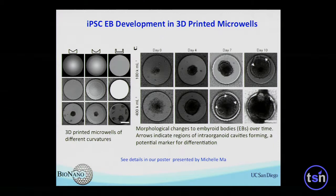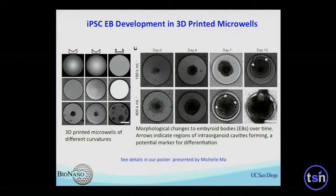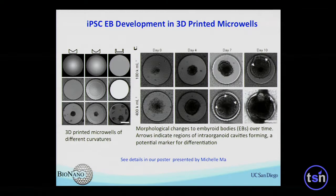To demonstrate this capability, we print microwell arrays with well-controlled curvature. If you buy substrates from Corning, you have one fixed shape in glass — here we print them in hydrogel with the concave structure you want, and you can control the cross-linking density, so each spot can have different mechanical properties, varying stiffness along the concave. We used that to look at iPSC embryoid body development, and the EB formation is quite different with different curvatures of these microwells.